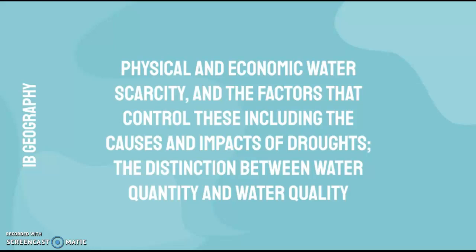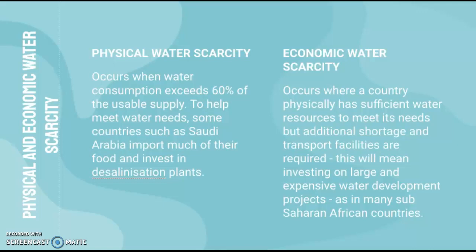Physical water scarcity occurs when water consumption exceeds 60% of the usable supply. To help meet water needs, some countries import much of their food and invest in desalination plants, such as Saudi Arabia. Economic water scarcity, on the other hand, occurs when a country has sufficient water resources to meet its needs but additional storage and transport facilities are required.